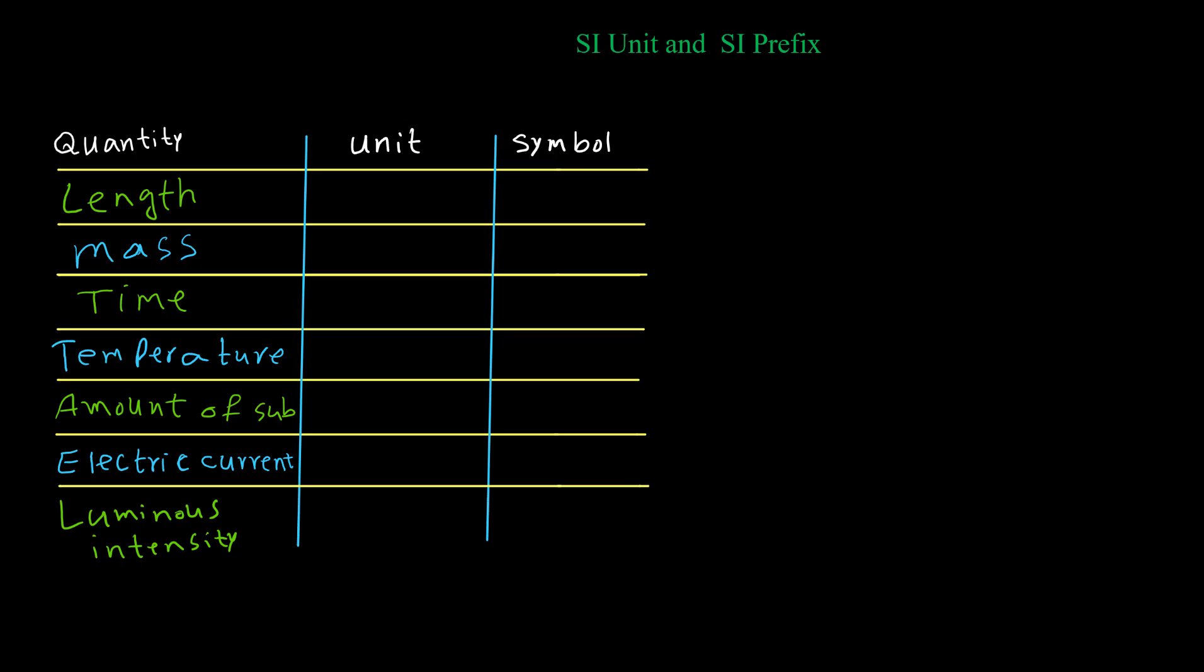The SI unit for length is meter and the symbol for meter is lowercase m. The second quantity for SI unit is mass. The unit for mass in SI system is kilogram and the symbol is lowercase k. The third one is time and the SI unit for time is second.